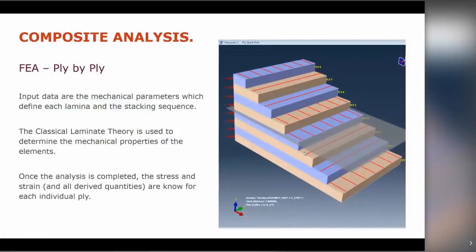The ply-by-ply approach requires quite detailed input into the finite element model, where you model each ply separately, inputting the material, orientation, and stacking sequence. This approach gives considerable detail on the structural behaviour in terms of stiffness, strength, failure indices, and interlaminar behaviour. You can use a 2D ply-by-ply approach for an approximation of through-thickness stresses, but if you are worried about through-thickness behaviour you would probably be advised to model it as a 3D solid, though that is a more involved and expensive procedure.